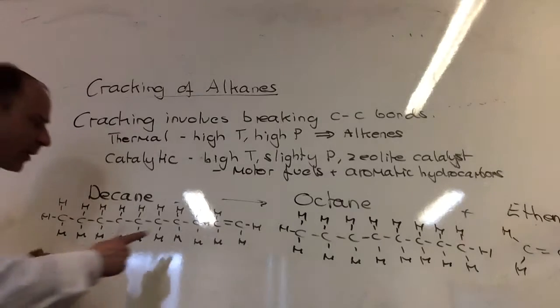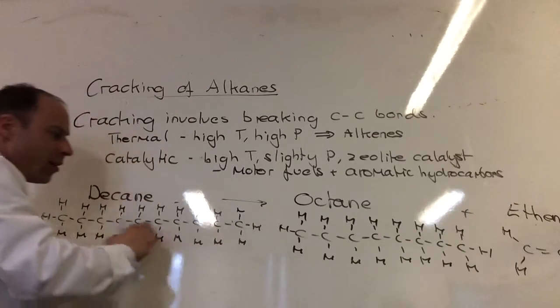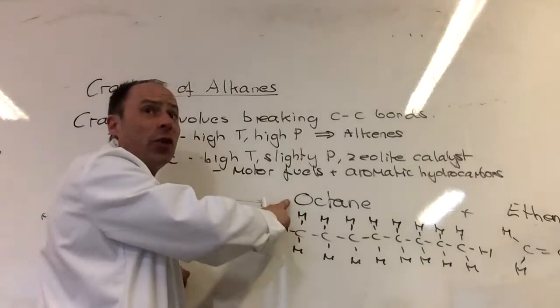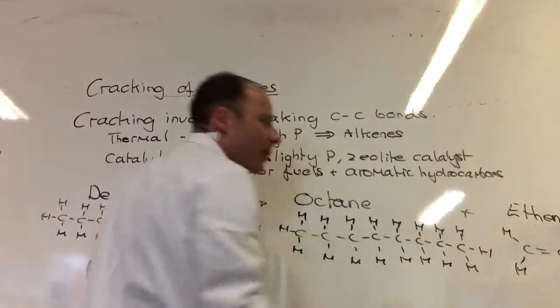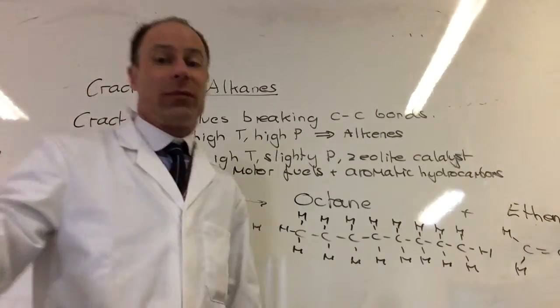So we've completed the equation. If I put that molecule back to the right again, we broke this molecule apart there to make octane. Octane is far more useful. We can pop it in our cars, and we've made ethene. What can ethene be used for from GCSE chemistry?